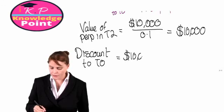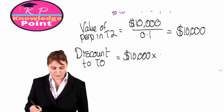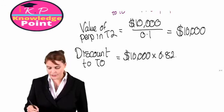When we discount to T0, it's 10,000 multiplied by 0.826, so 8,260.